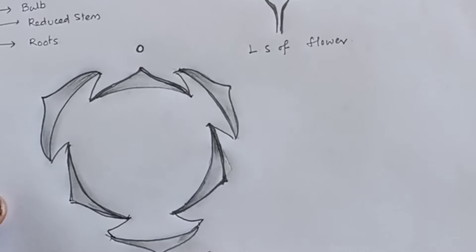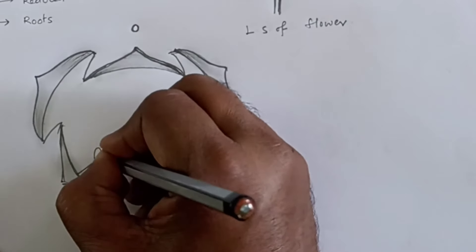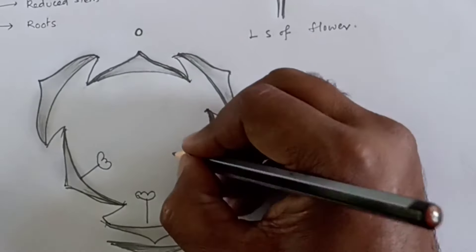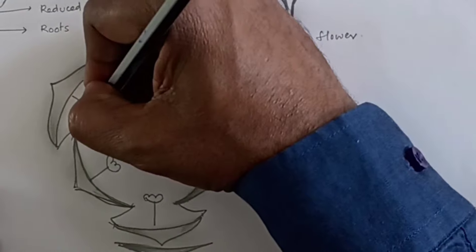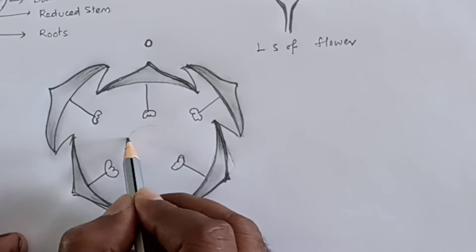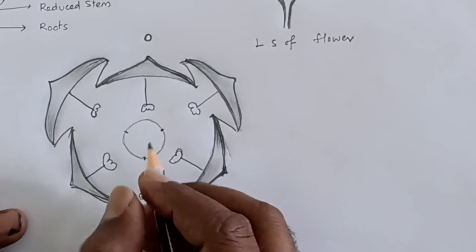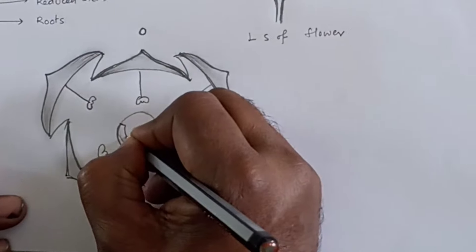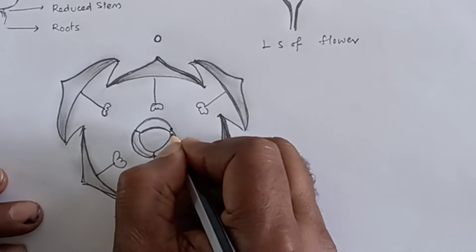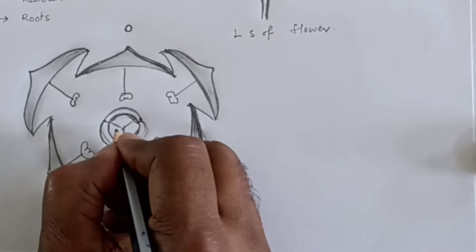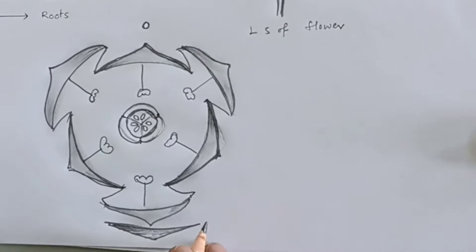So, VT is the main bracket. This is the androecium. It indicates the stamens. Now the gynoecium — axile placentation. Androecium is shown here. This is now completed.